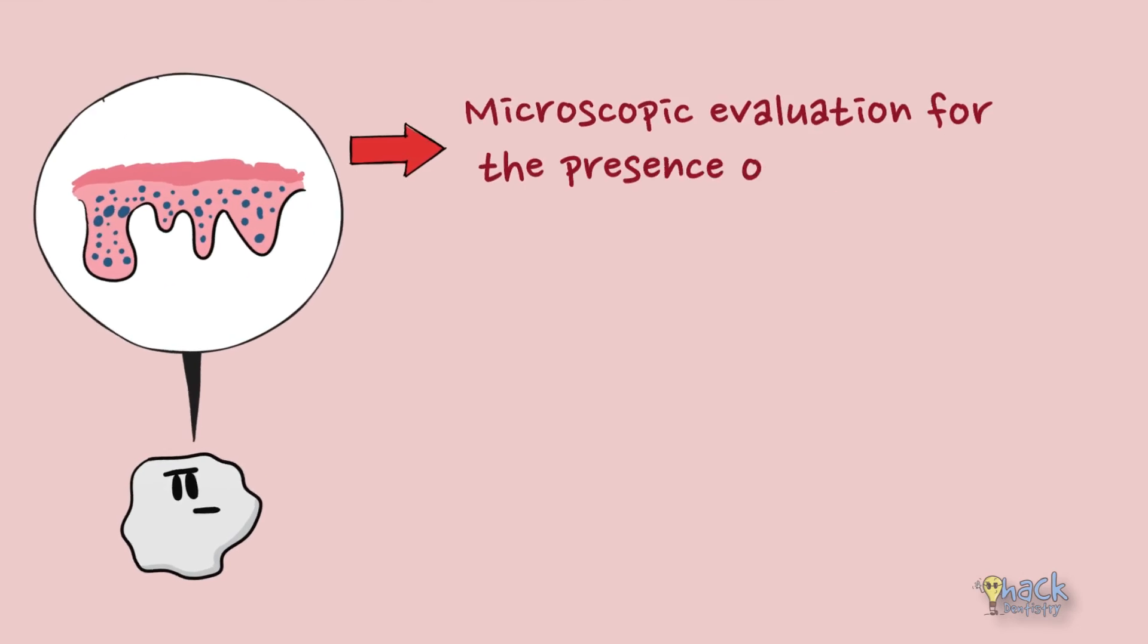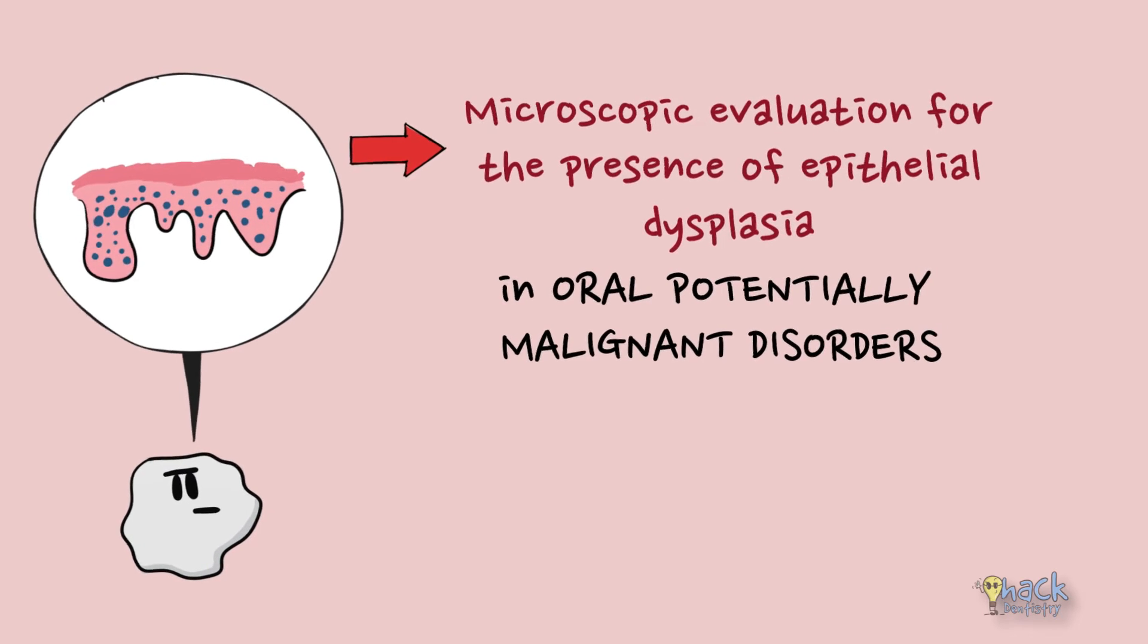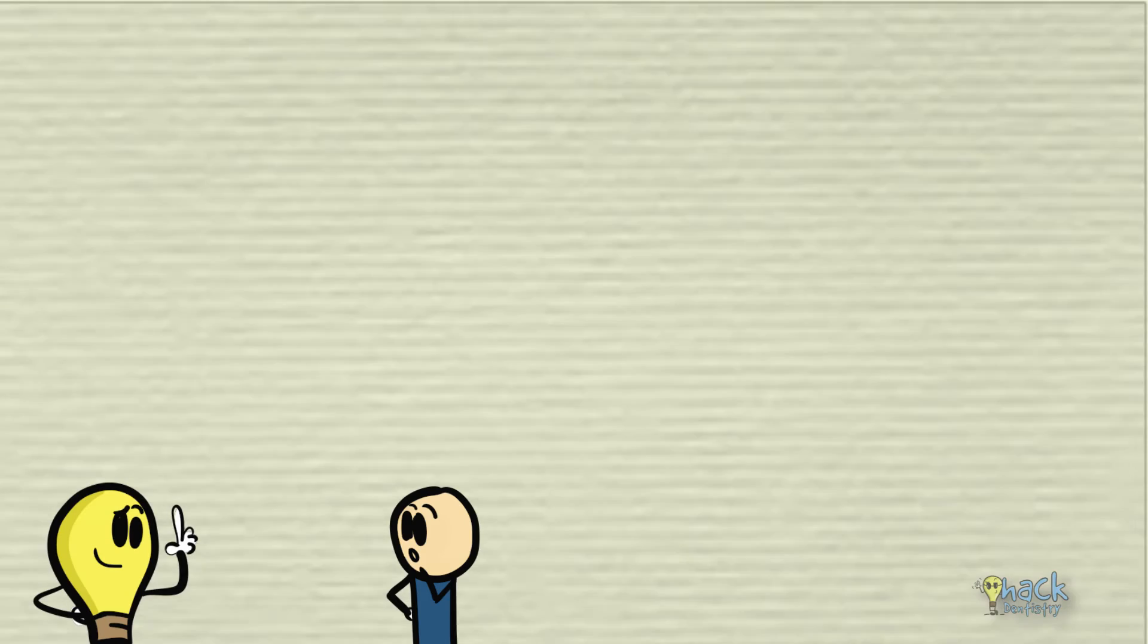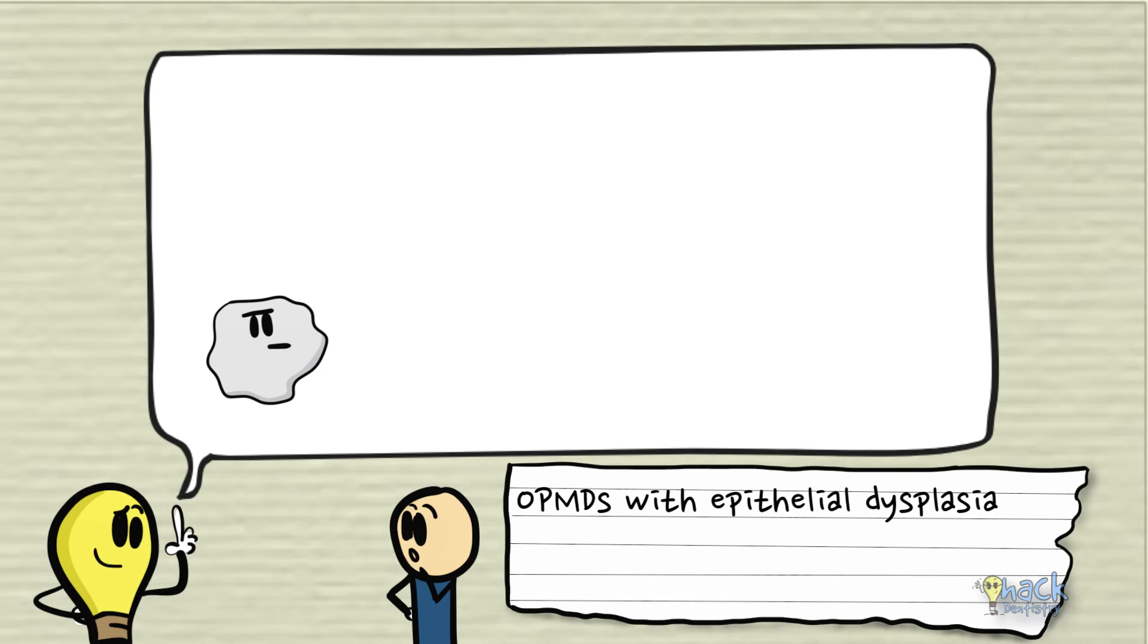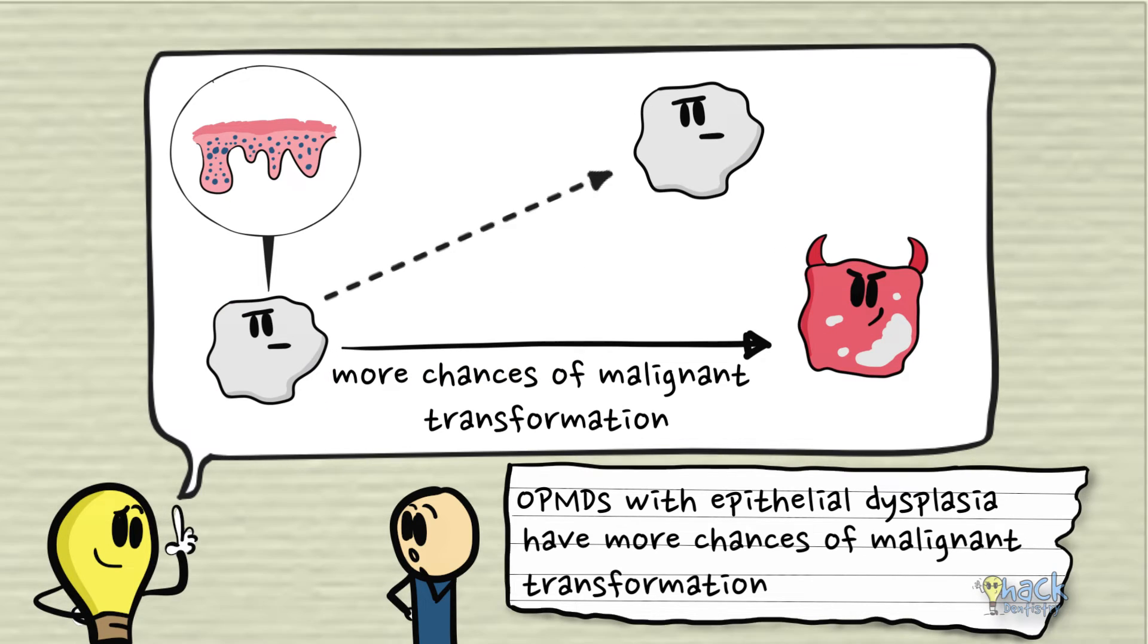However, the microscopic evaluation for the presence of epithelial dysplasia in oral potentially malignant disorders remains the gold standard for the assessment of these lesions. It is believed that oral potentially malignant disorders with epithelial dysplasia have more chances of malignant transformation.